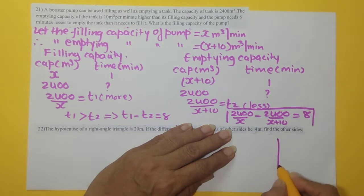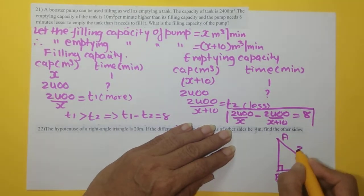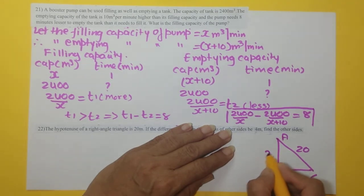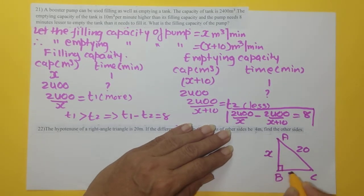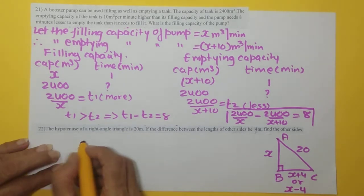Now let us draw the triangle to understand this better. This is our right angle triangle. Suppose, now hypotenuse is 20, and the difference between the sides is 4. So this can be either x plus 4 or you can have it x minus 4.